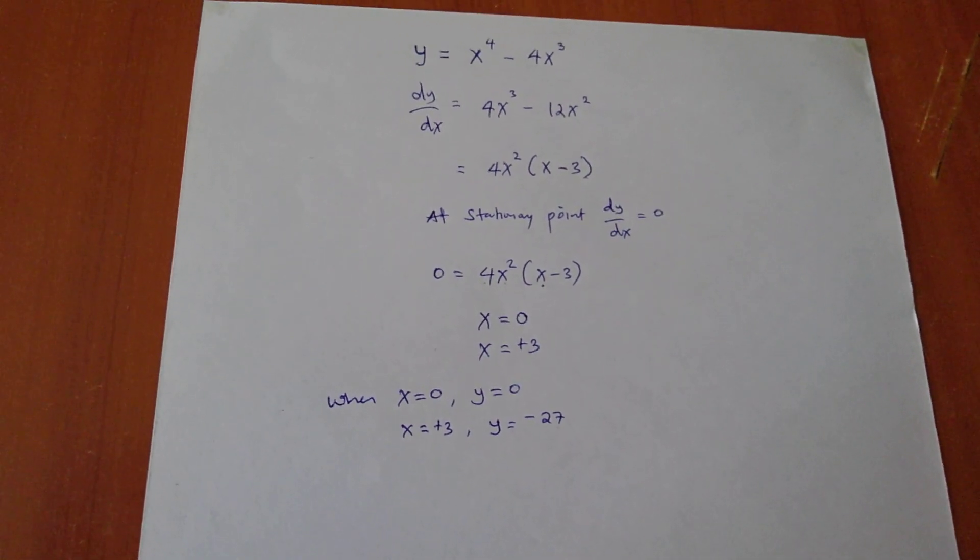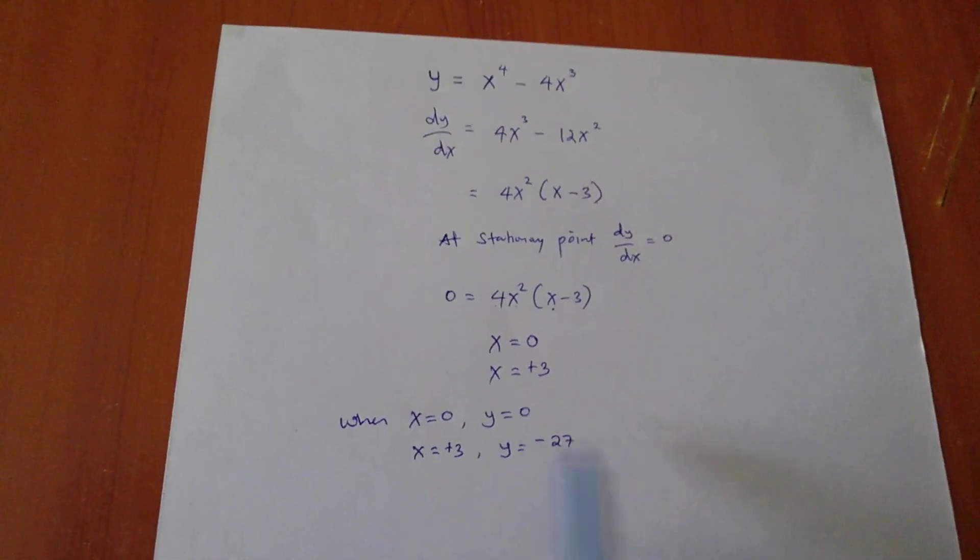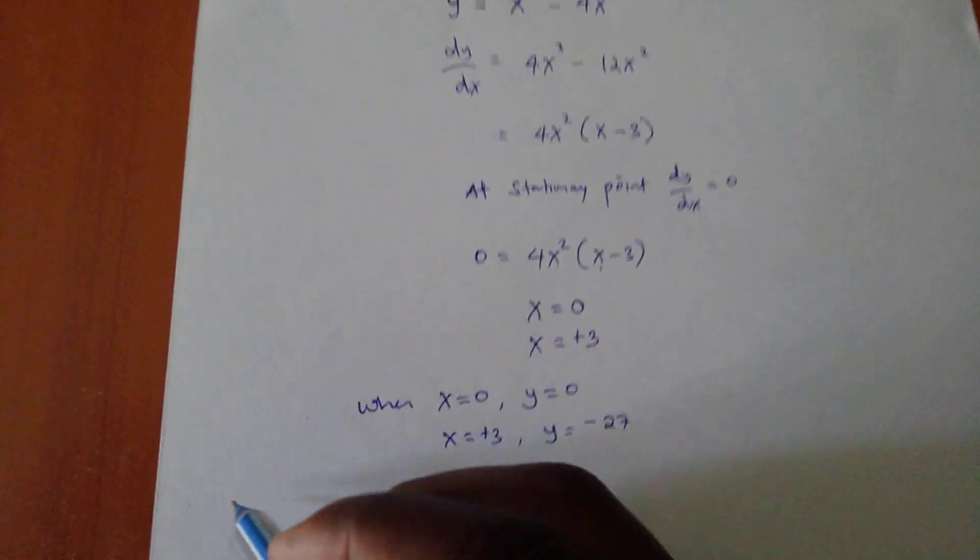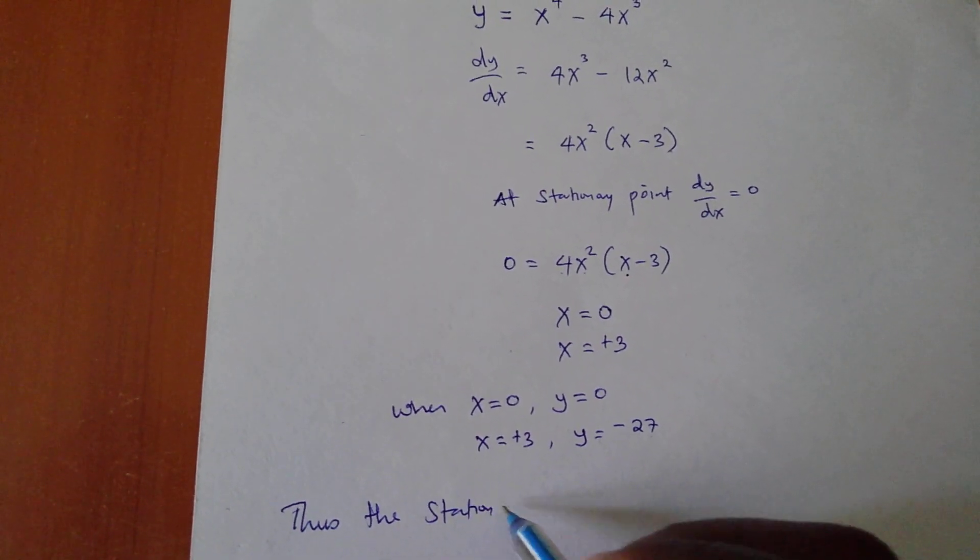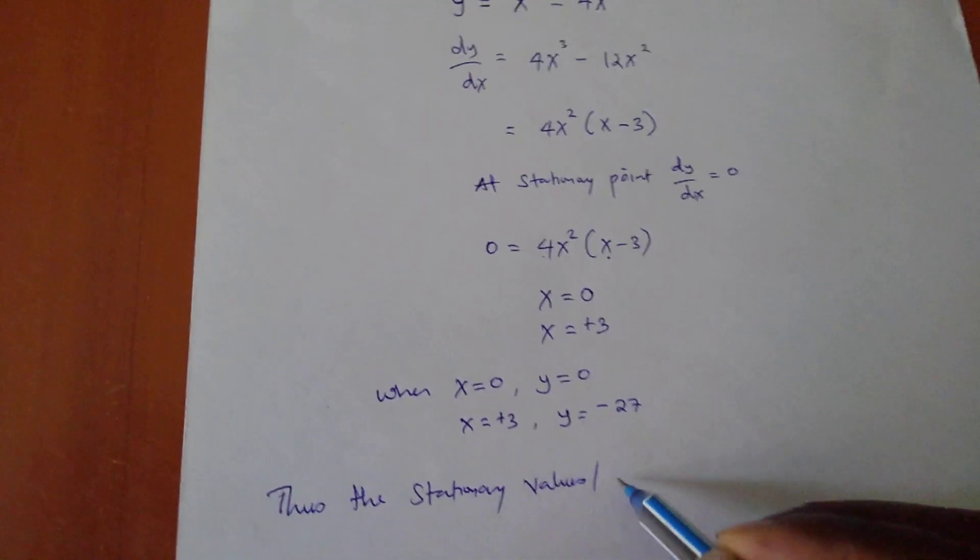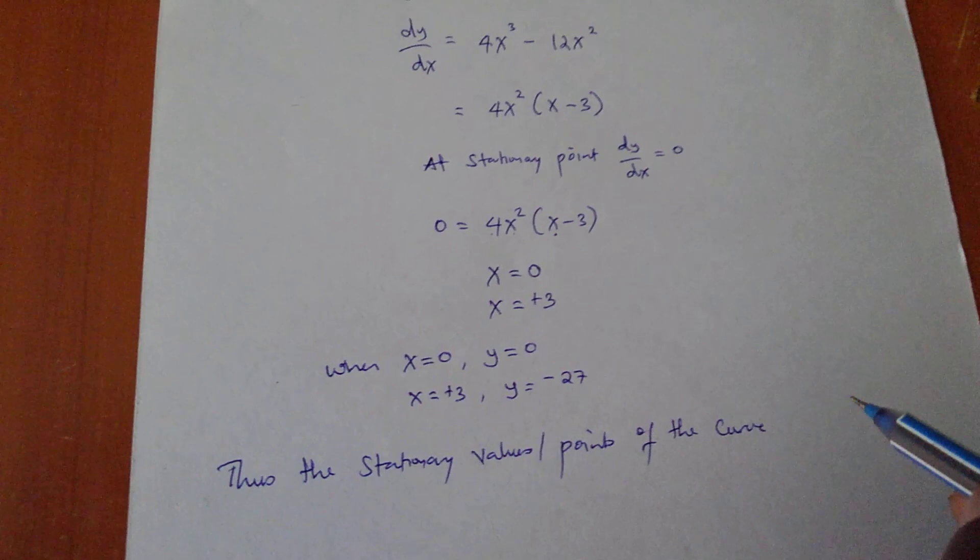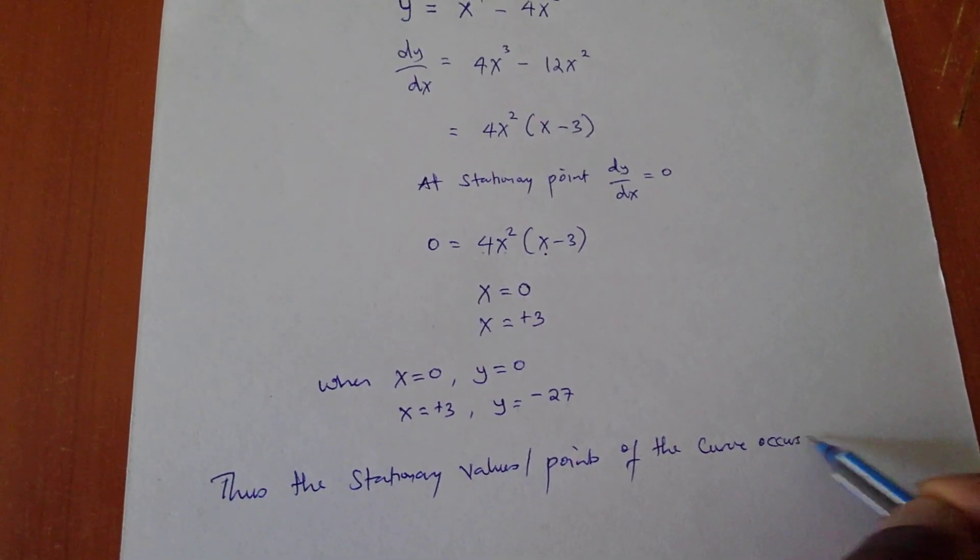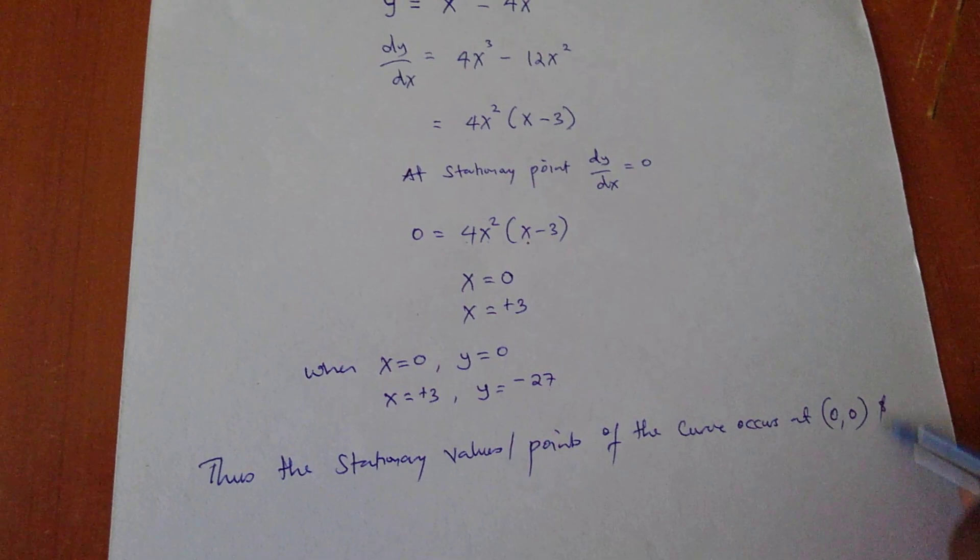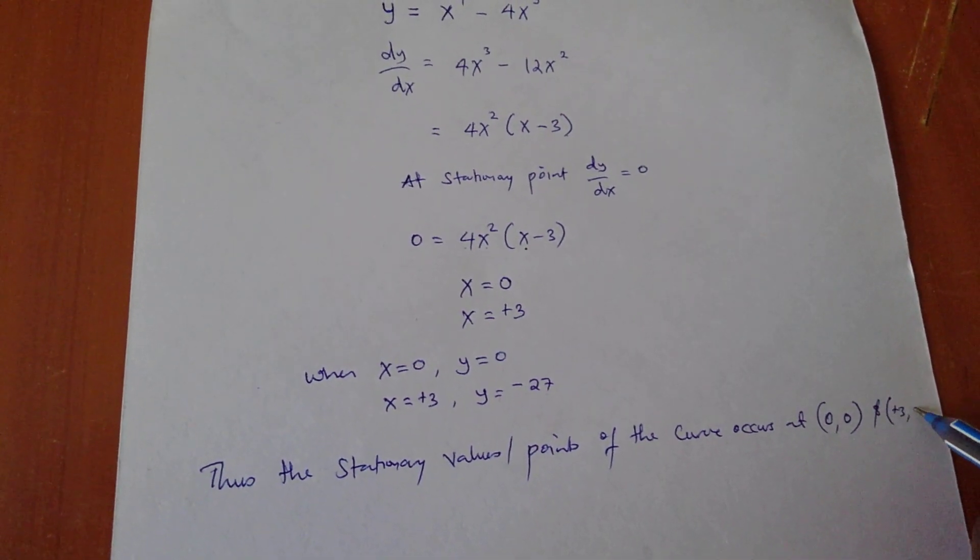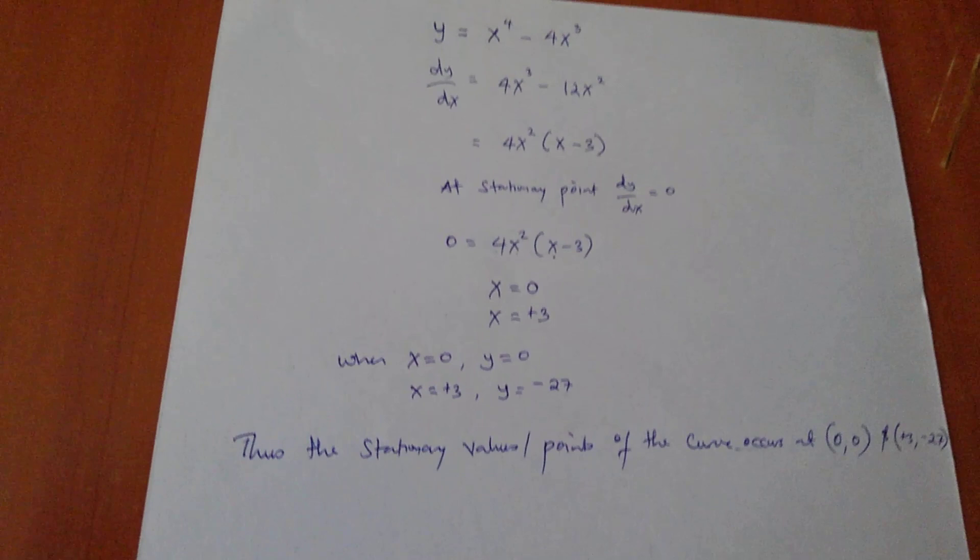So, the stationary values or points of this curve are at the coordinates I'm going to give. Thus, the stationary values or points of the given curve occur at the origin (0, 0) and (3, -27). So, these are the stationary points of the curve being given.